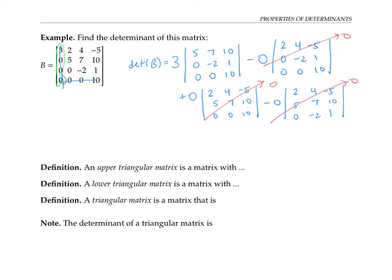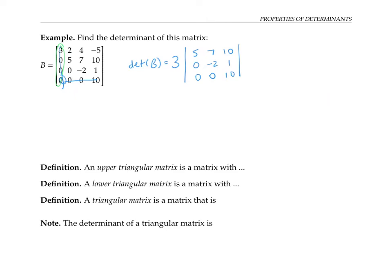The determinant of B is just three times this three by three determinant. Continuing, I'll figure out this three by three determinant by expanding along its first column, since it has a lot of zeros. Carrying the three and expanding: that's five times a two by two determinant, minus zero times something, plus zero times something — so those drop out.